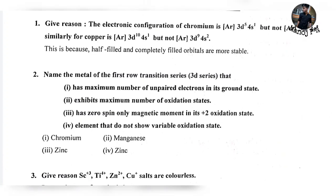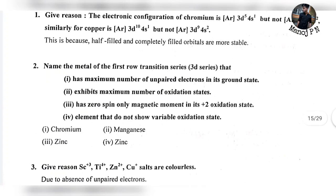The 4D capacity is 10 and the 3D capacity is 5, so it is half-filled. For copper, 3D10 means it is completely filled — capacity is 10, and 4S capacity is 2, but its actual count is 1. Half-filled and completely filled orbitals are more stable, so you can use this configuration.